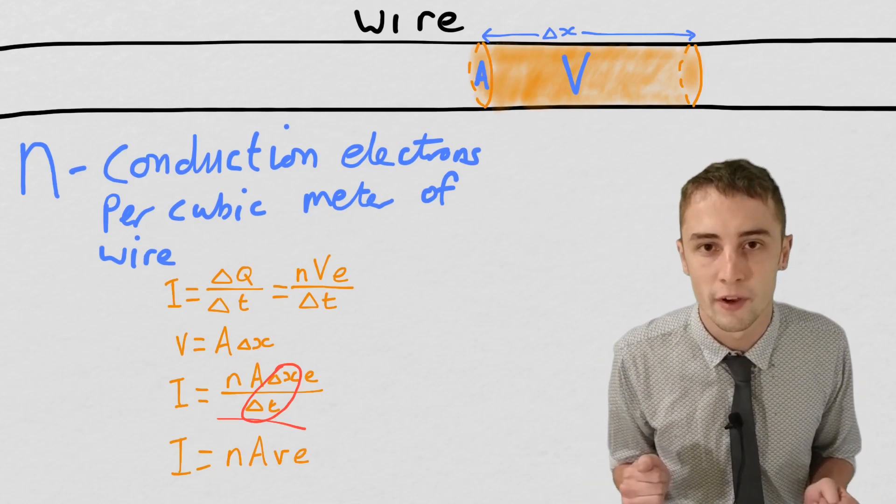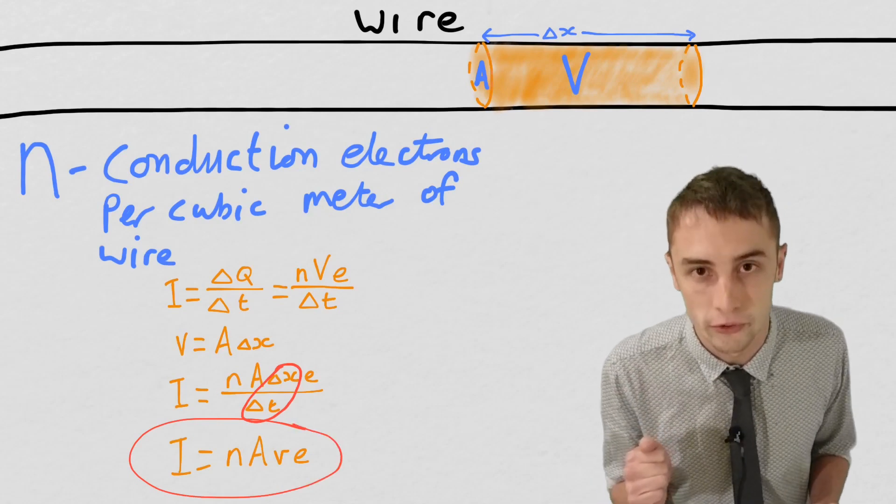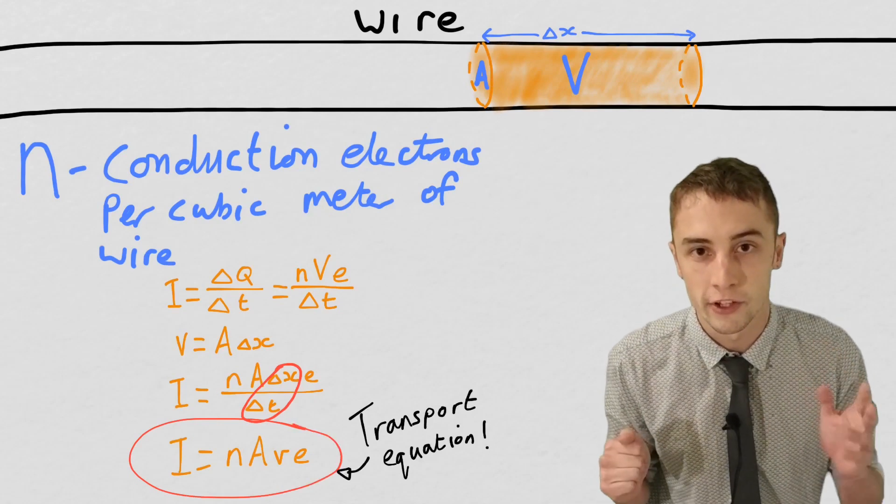And there we have it. We have what we call the transport equation involving drift velocity. So it's the current.